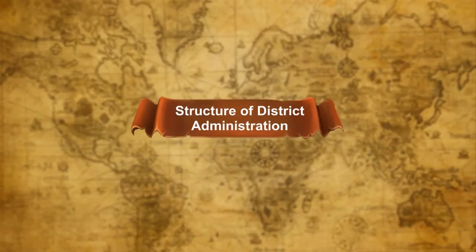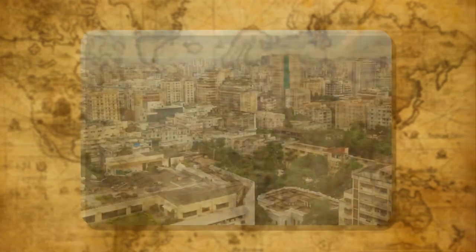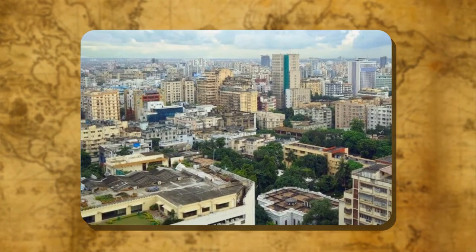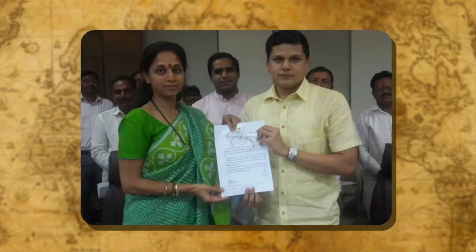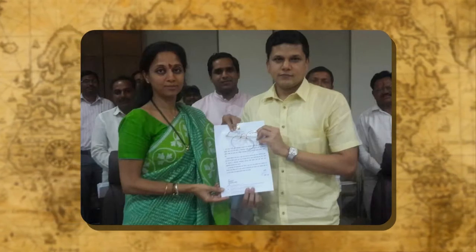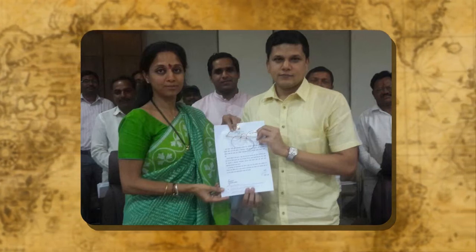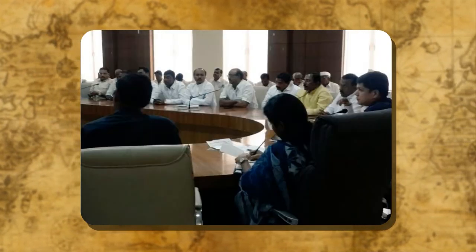Structure of a district administration. A district is a very important unit of administration. The official who administers is called District Collector or District Magistrate, DM, or Deputy Commissioner, DC. He is a member of the Indian Administrative Service, IAS, and is generally an experienced and efficient officer. The District Collector is in charge of the district, and hundreds of officials work under him.